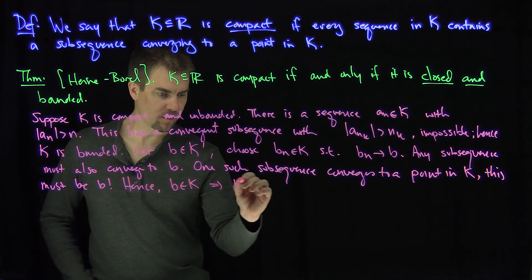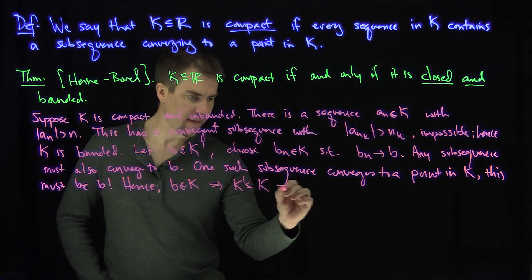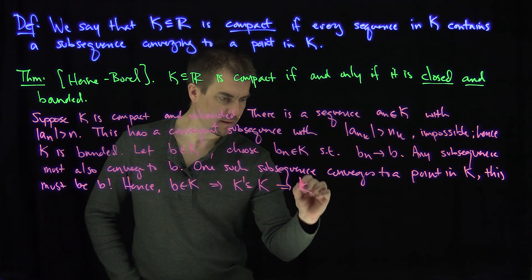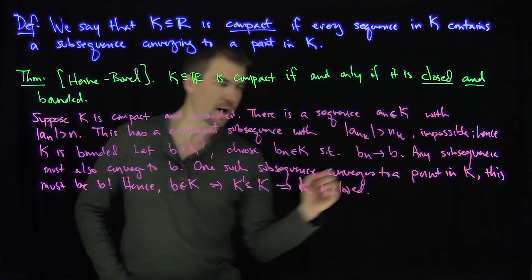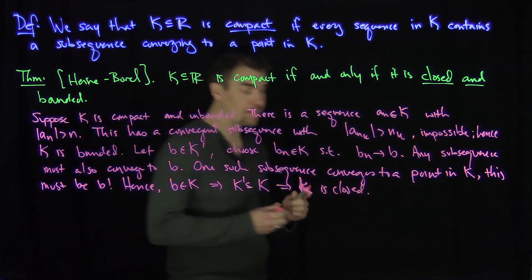And that proves that k prime is contained in k. And that implies that k is closed. So if it's compact, it's bounded and it's closed. Now let's go the opposite direction.